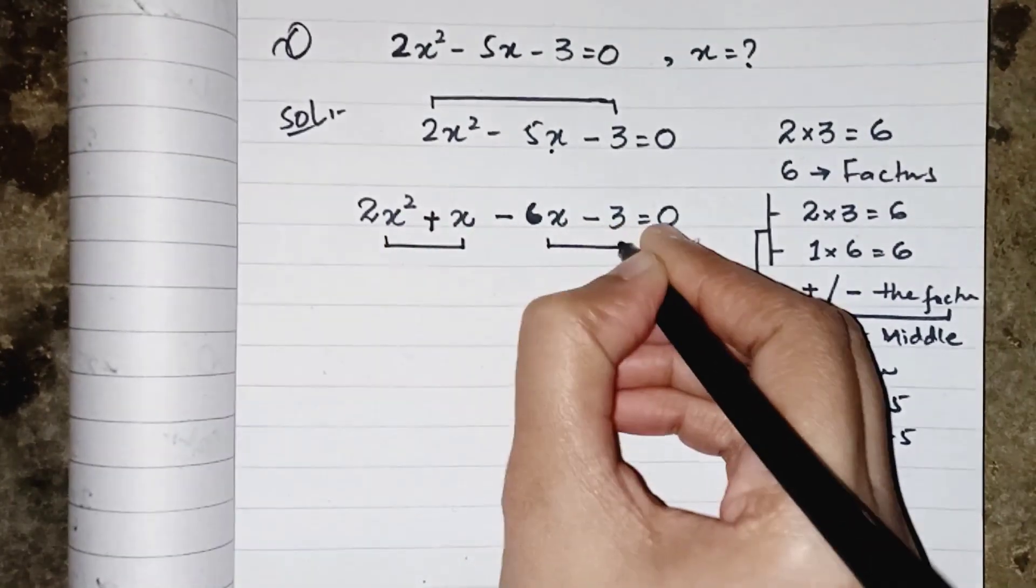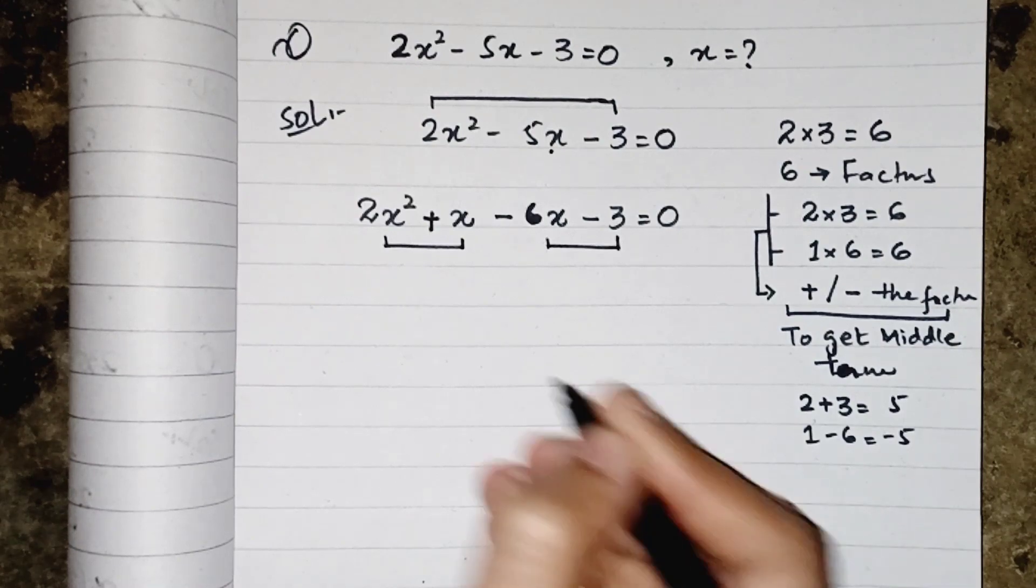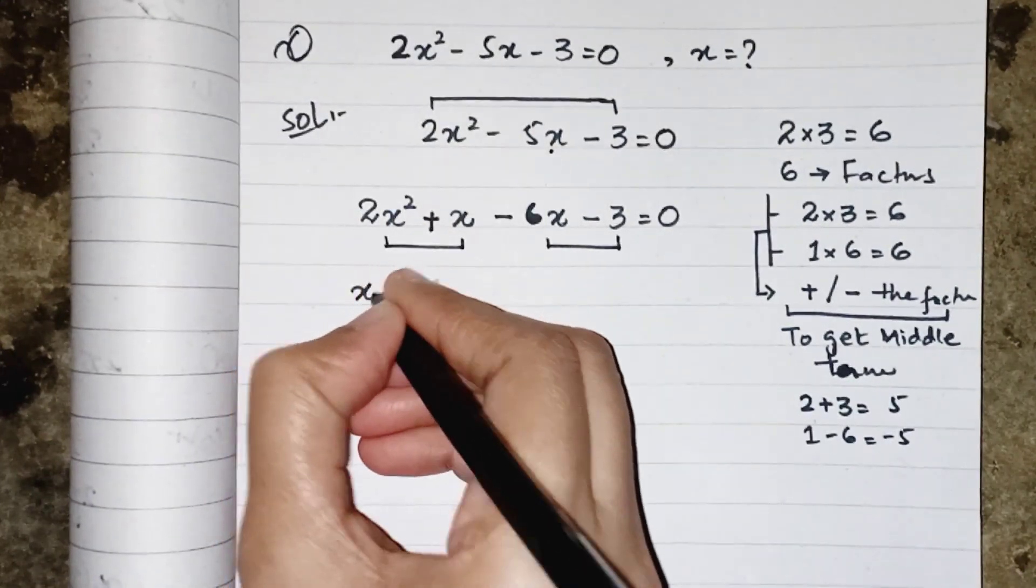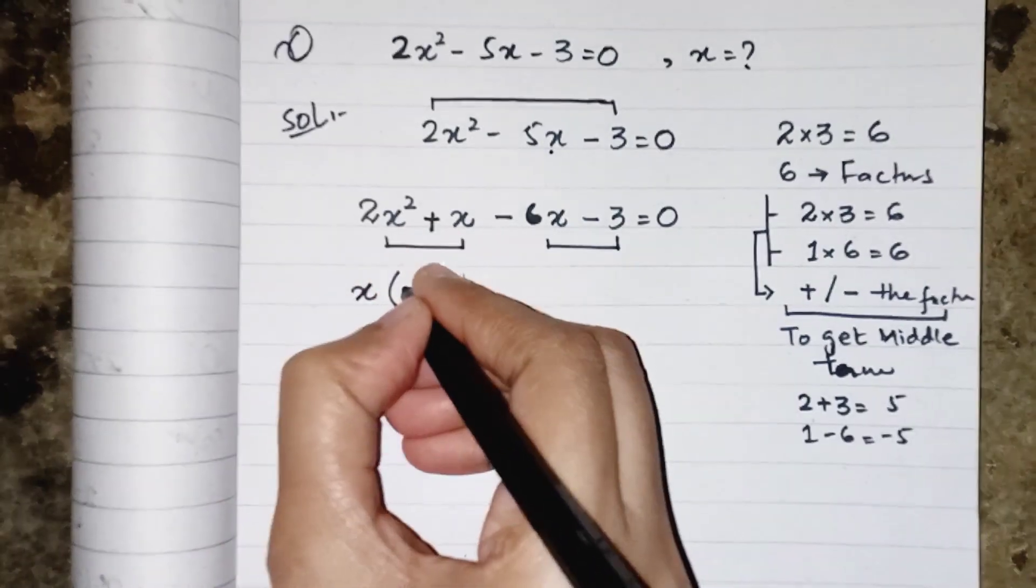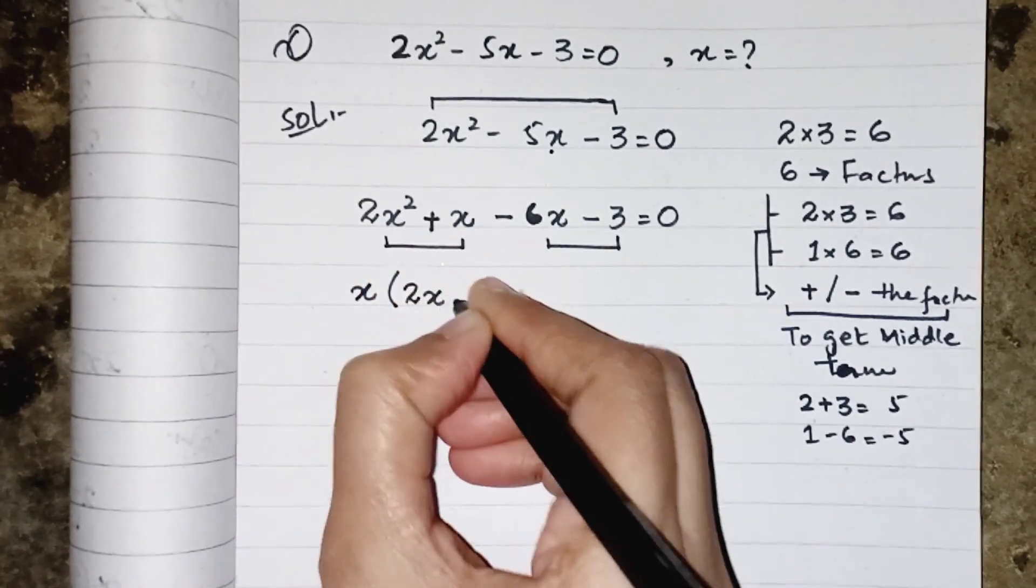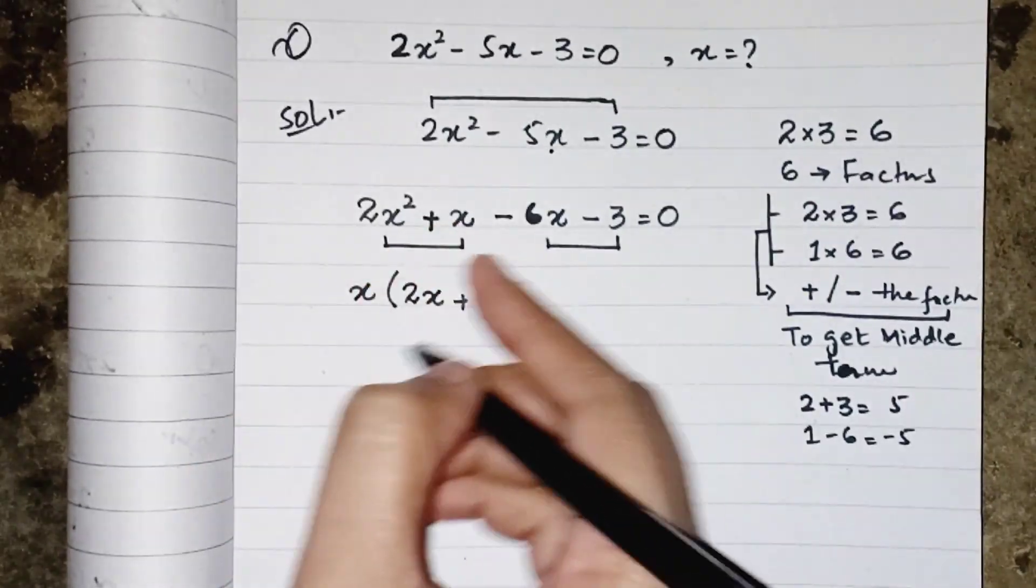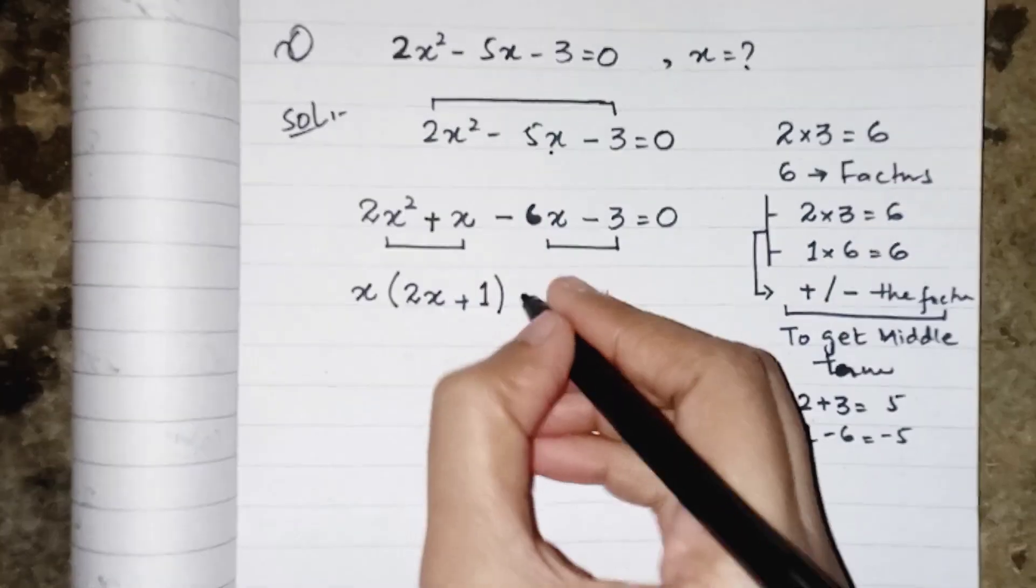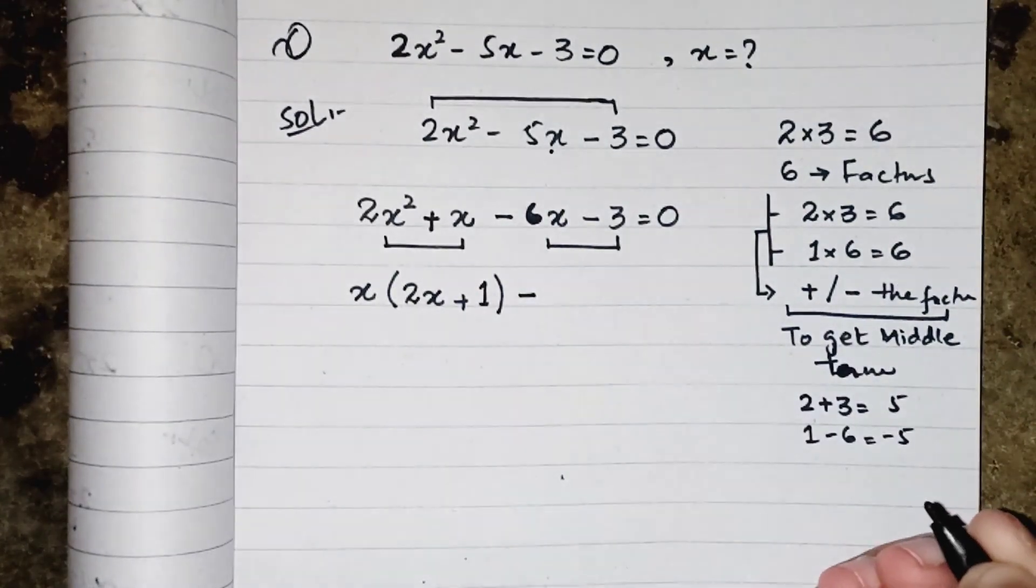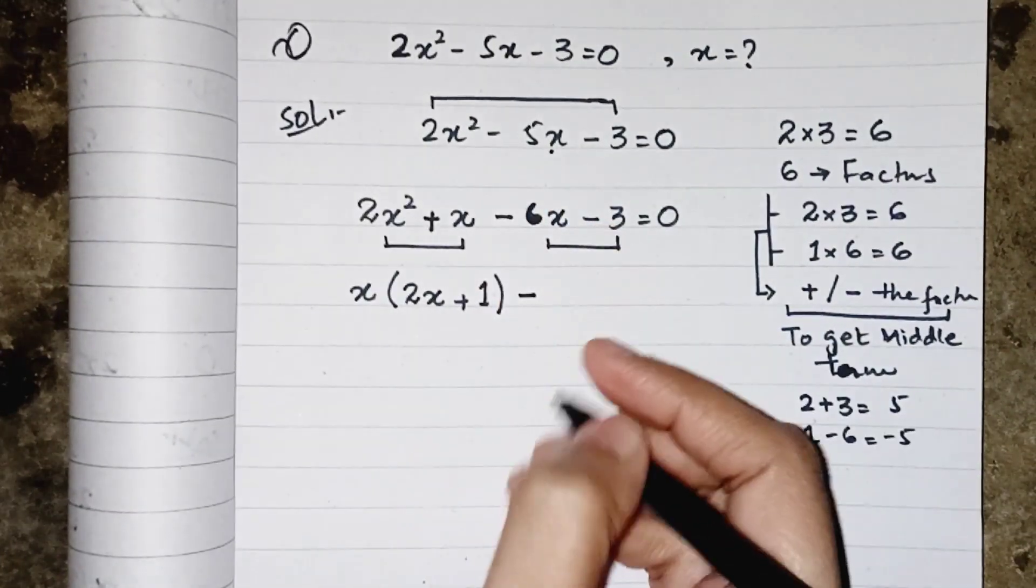Now we have to take common of first two and the last two terms. So the common from first two terms are x. When we take x as common from 2x squared, so it will be 2x, and we will take x as common from x, so it will remain 1.